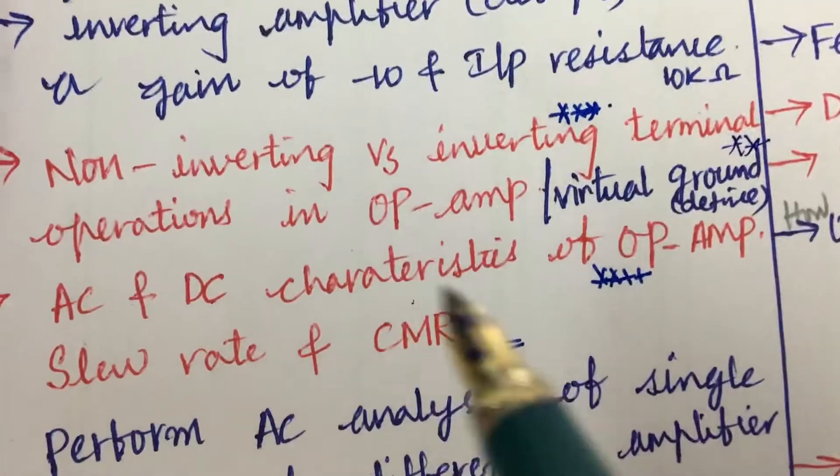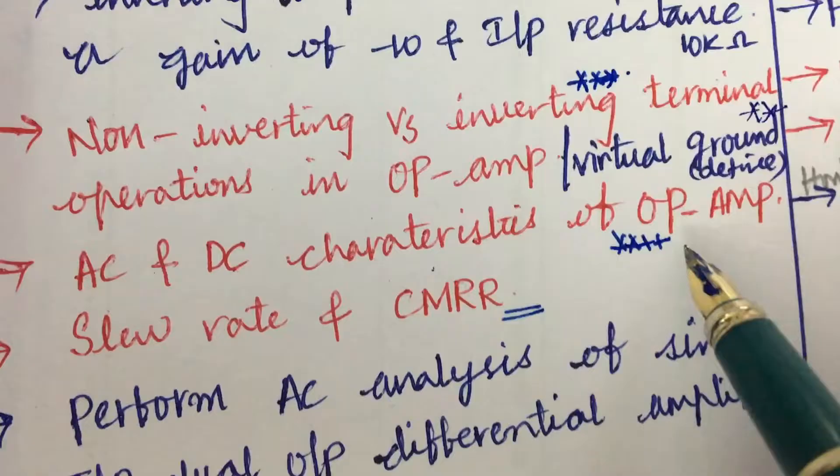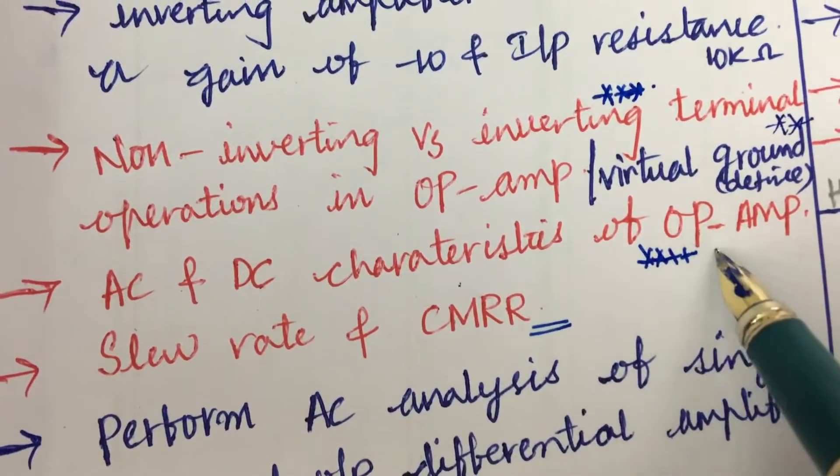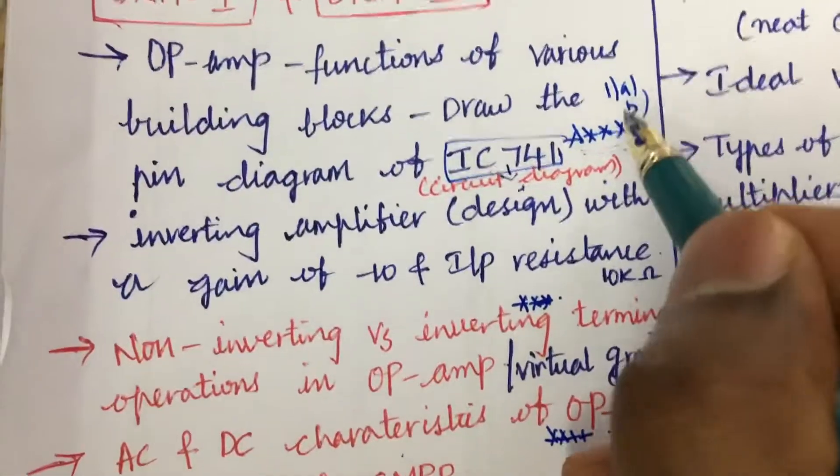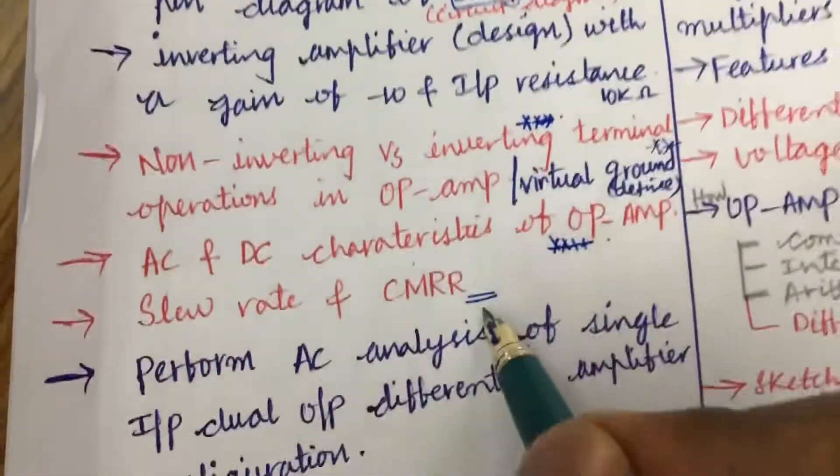This may be also one of the very important questions. AC and DC characteristics of OP AMP may be also one of the gunshot questions, and slew rate and CMRR define these terms. Till this part you will be getting 1A as well as 1B till here.